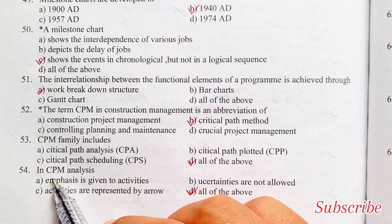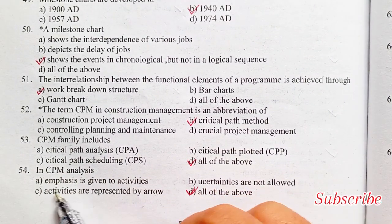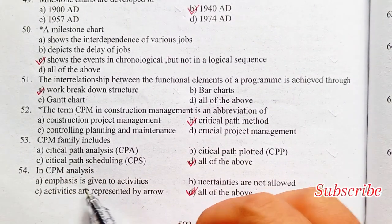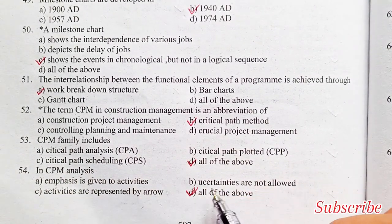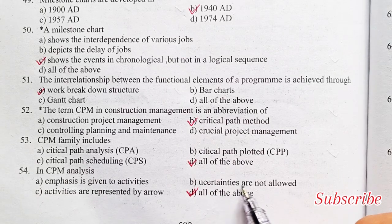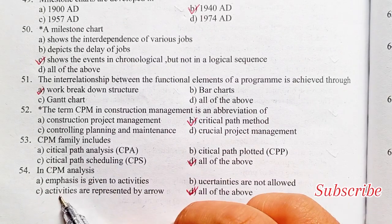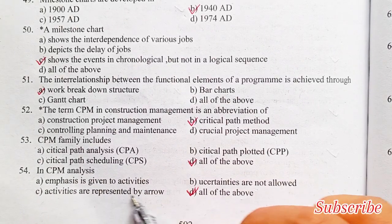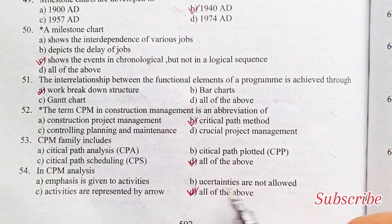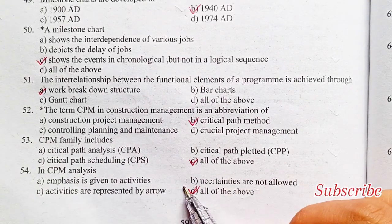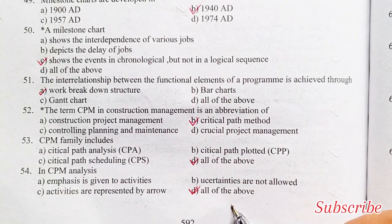In CPM critical path method analysis: importance is given to activities, uncertainties are not allowed, activities are represented by arrows, all of the above. Option D is the right answer — all of the above.